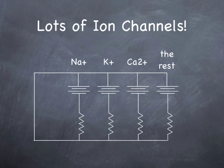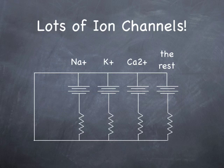Each one of these ion channels is modeled as a battery resistor combination. And the cell wall itself has some capacitance there. It's about 10 millifarads. So basically this is what the circuit looks like.